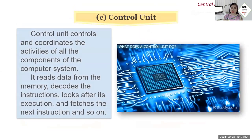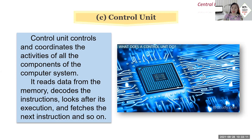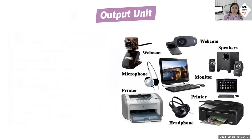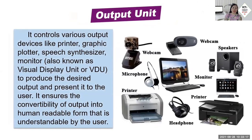The control unit controls and coordinates the activities of all the components of the computer system. It reads data from memory, decodes the instructions, oversees their execution, and fetches the next instruction in sequence.